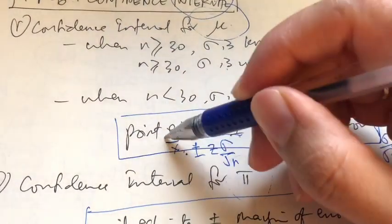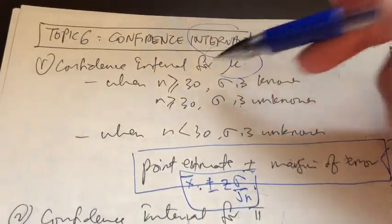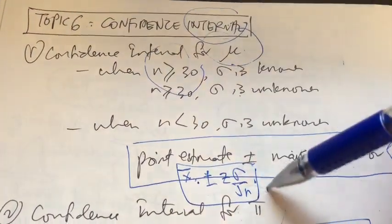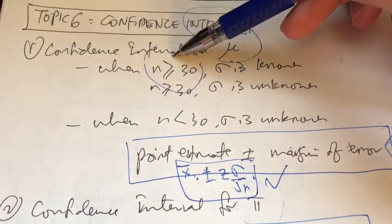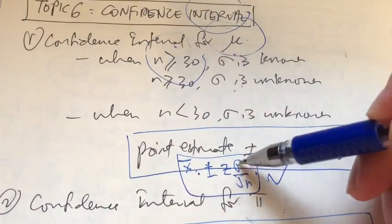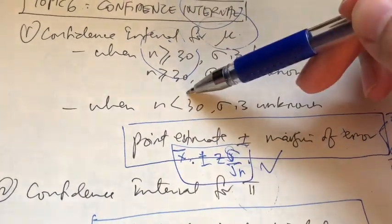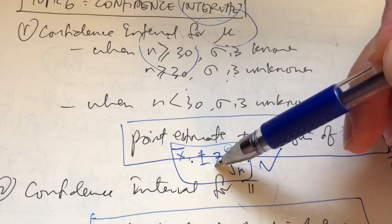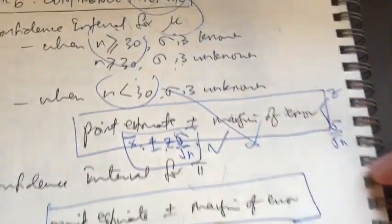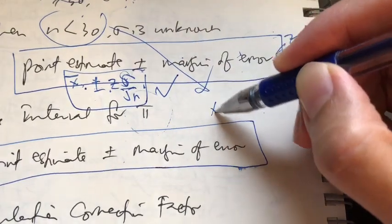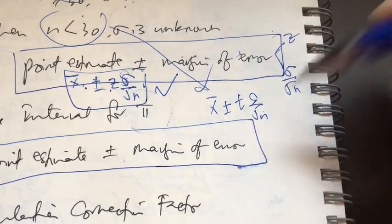This basic formula changes depending on the situation. If we have a large sample size and we know sigma, we use that formula. If we have a large sample size but don't know sigma, we substitute sigma with s. If we have a small sample size, we cannot use z at all — we use t instead. The formula becomes: x-bar plus or minus t times s over square root of n.